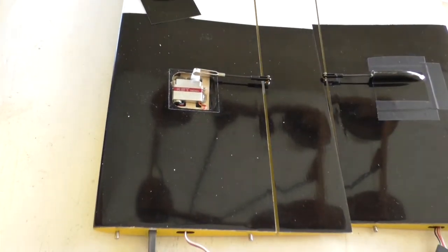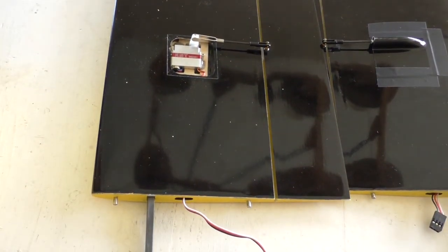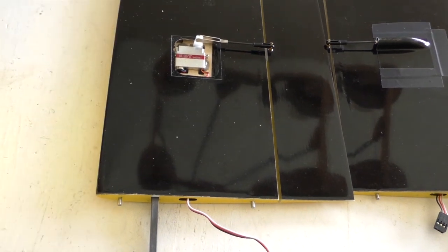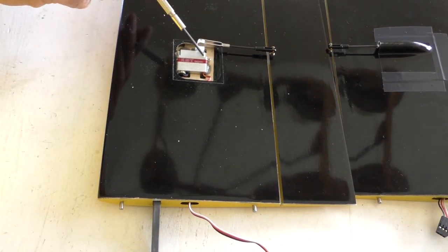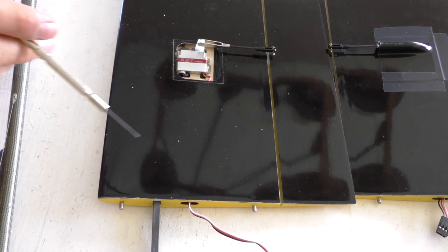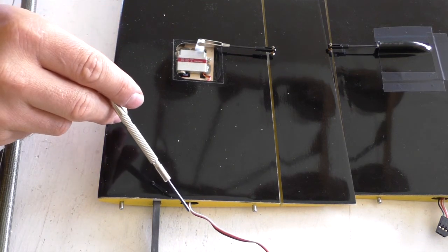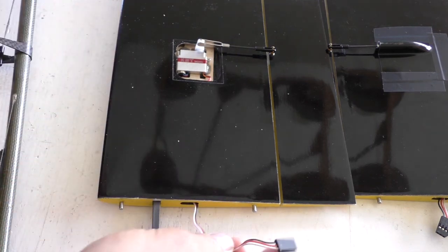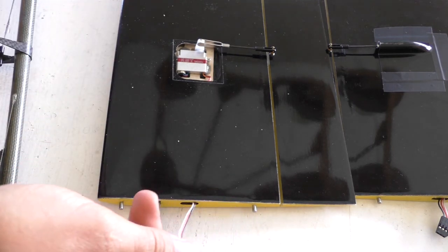A little bit frustrating was noticing that the servo lead from the KST servo is two centimeters short of reaching out here, so I just put on a 10 centimeter extension.